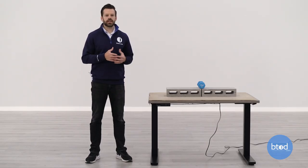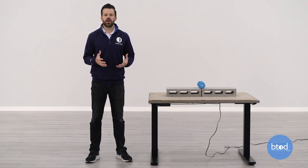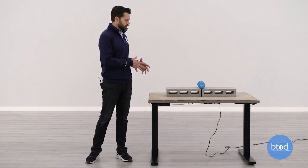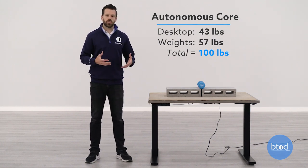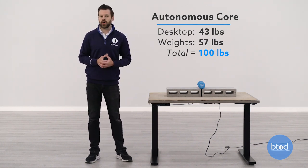Before we show you the first test for the Autonomous Core product, we want to talk about a couple different things. Number one is the setup. As you can see, the desk does have cinder blocks on the top, plus a smaller dumbbell, and the weight of the surface to hit that first 100 pound mark.